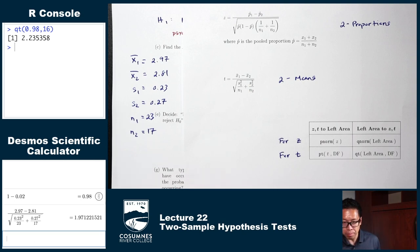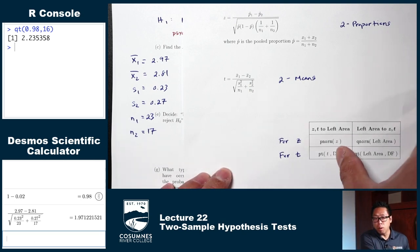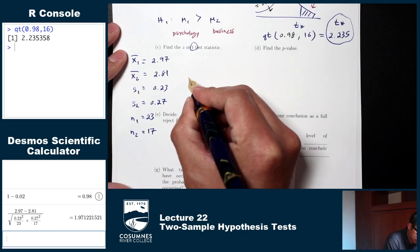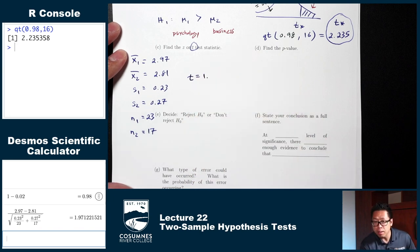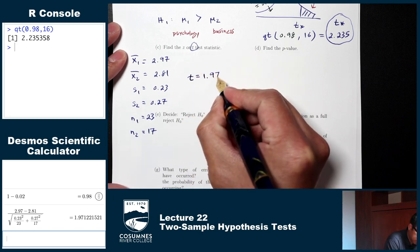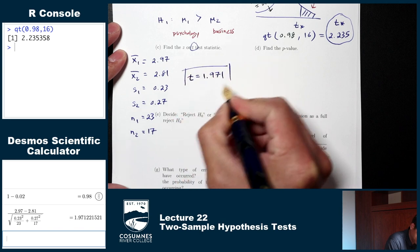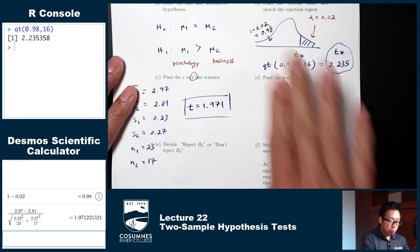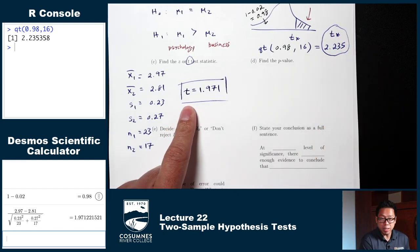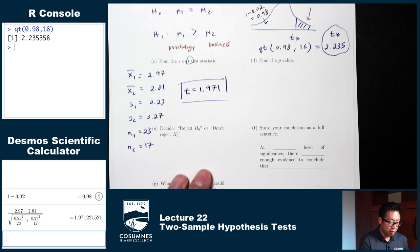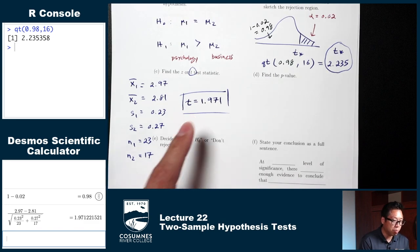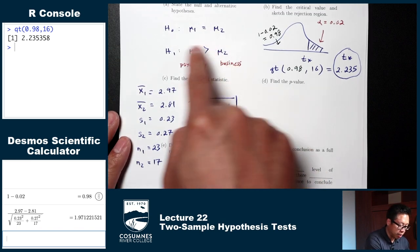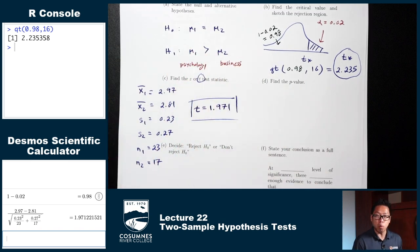Entering into the calculator gives T = 1.971, rounded to three decimal places. For a picture shaded to the right, we expect both the critical value and test statistic to be positive. If you got a negative, you likely swapped your ones and twos.